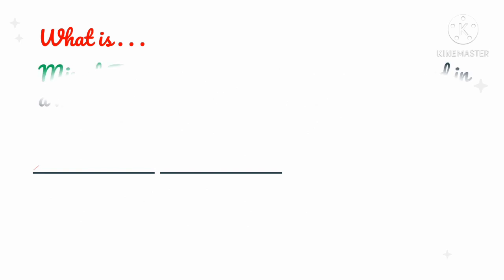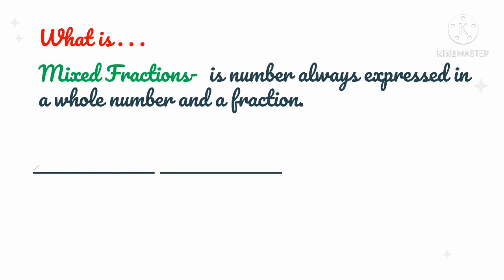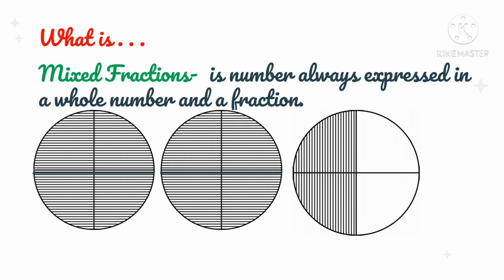So how about mixed fraction? Or sometimes we call it a mixed number. A mixed fraction is a number always expressed as a whole number and a fraction — it is a mix of a whole number and a fraction. So let's take a look at this example. 4 over 4 is equivalent to one whole. We can see two wholes, then the remaining fraction is expressed as 2 over 4. If we combine them, we have two whole numbers and the fraction 2 over 4, which can also be written as one-half. Therefore, 2 and a half is an example of a mixed fraction since it has a combination of a whole number and a fraction.